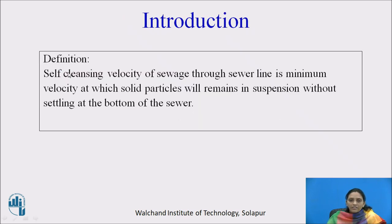Why is self-cleansing velocity required? Why is it important? As we know, sewage contains inorganic and organic solid material in suspended form when the sewer flows. If it is not flowing, what will happen? That solid material will settle down in the sewer and may result in its clogging.